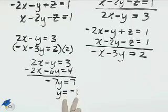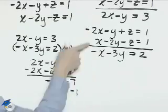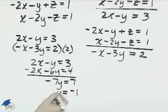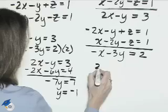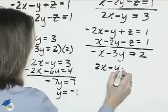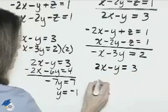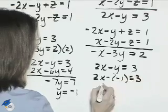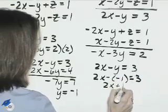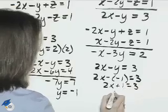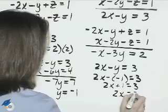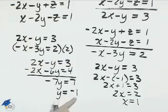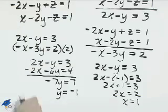y equals negative 1, and then we'll put in either one of these two equations that has just the x and the y. I'll go with 2x minus y equals 3. So 2x minus y equals 3, in place of y goes negative 1. 2x minus negative 1 equals 3. So that's 2x plus 1 equals 3. Subtract the 1. 2x equals 2, and x is equal to 1.